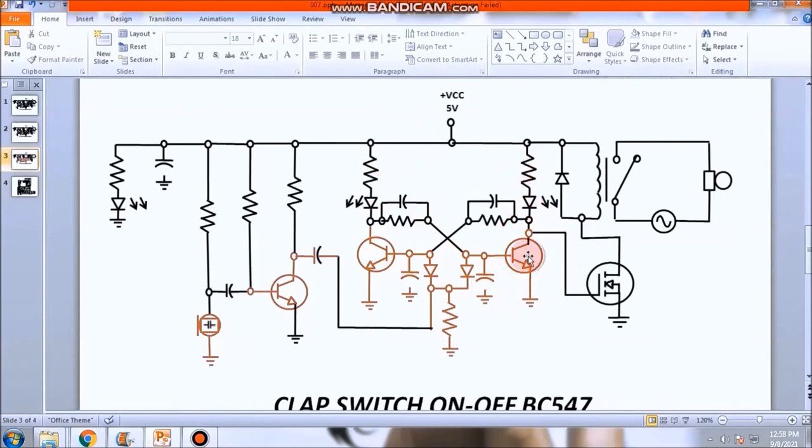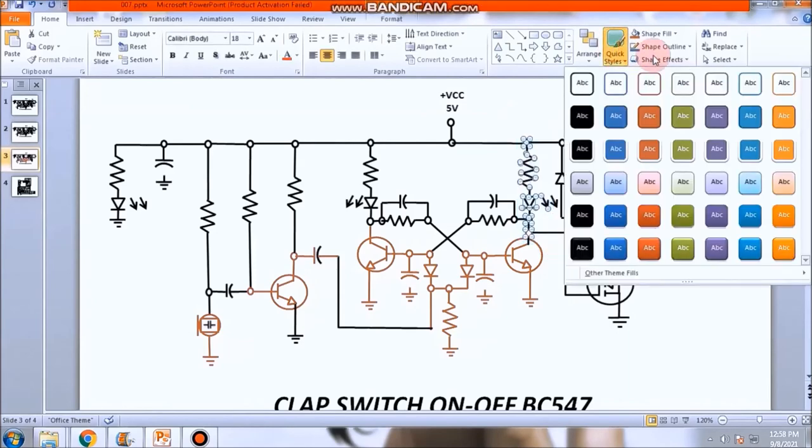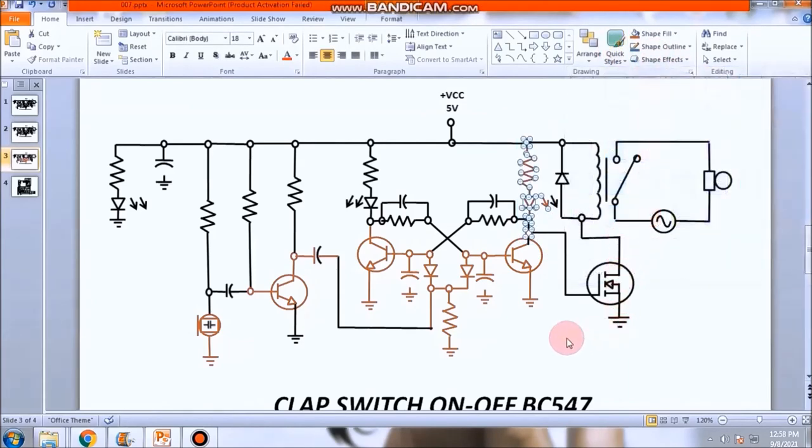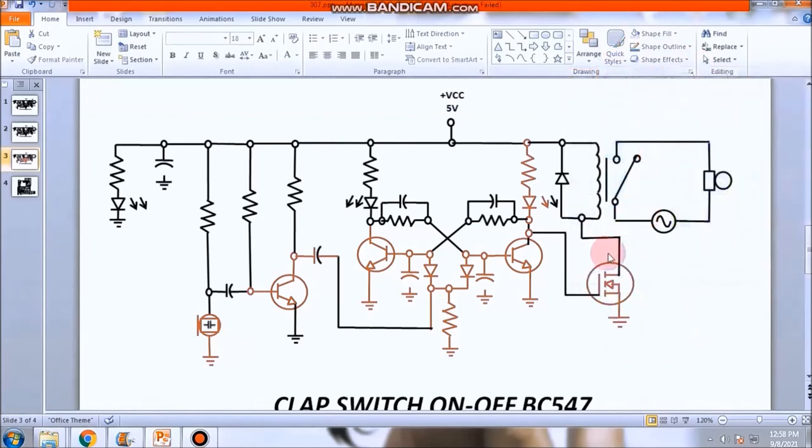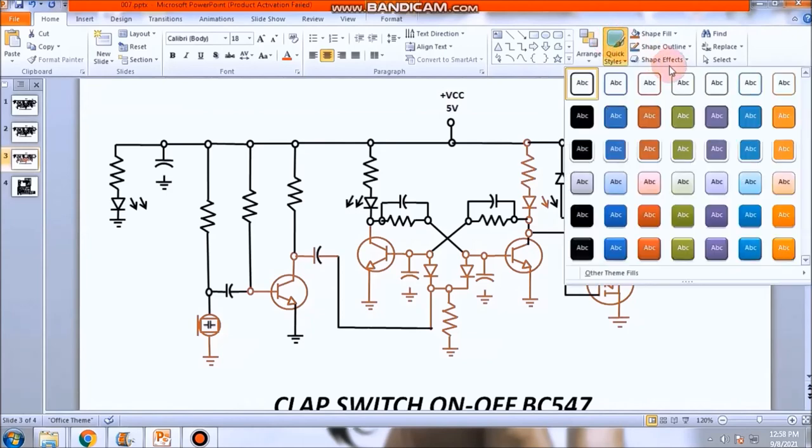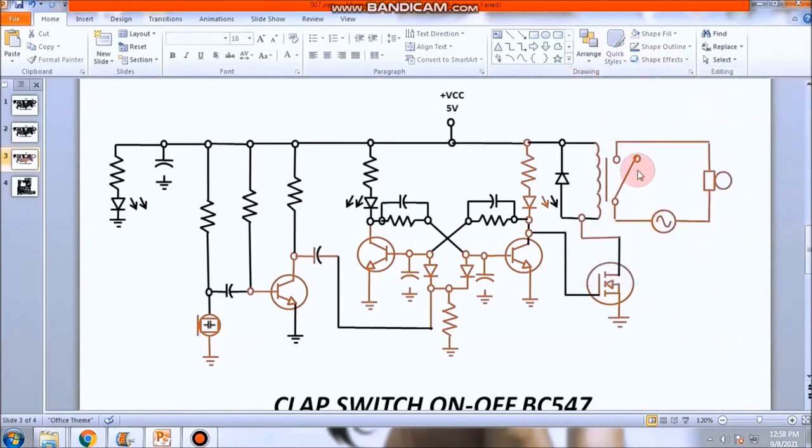Ngayon pag nag-on ito i-off yung MOSFET. Pag naman off ito ang current papunta naman dito, dito naman ang punta sa MOSFET diba? Pag nag-on ng MOSFET, on din yung ano yung valve diba? May sarili siyang circuit 220, magdidikit yung contact dito.